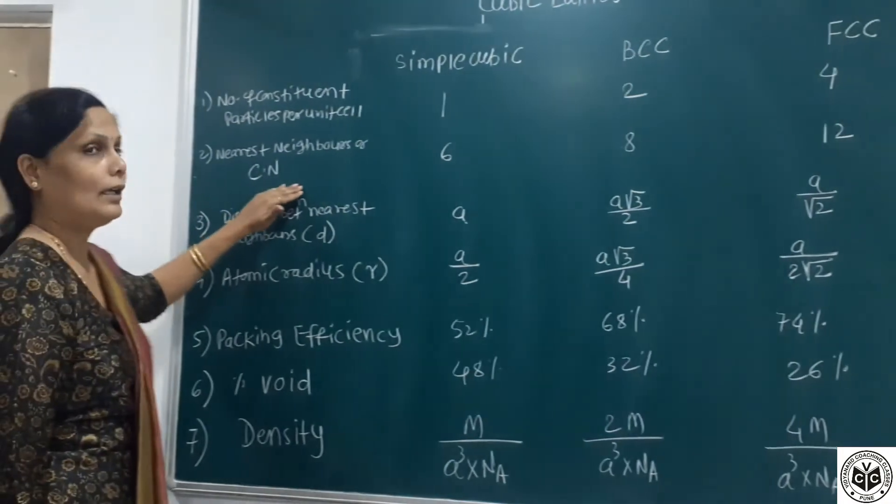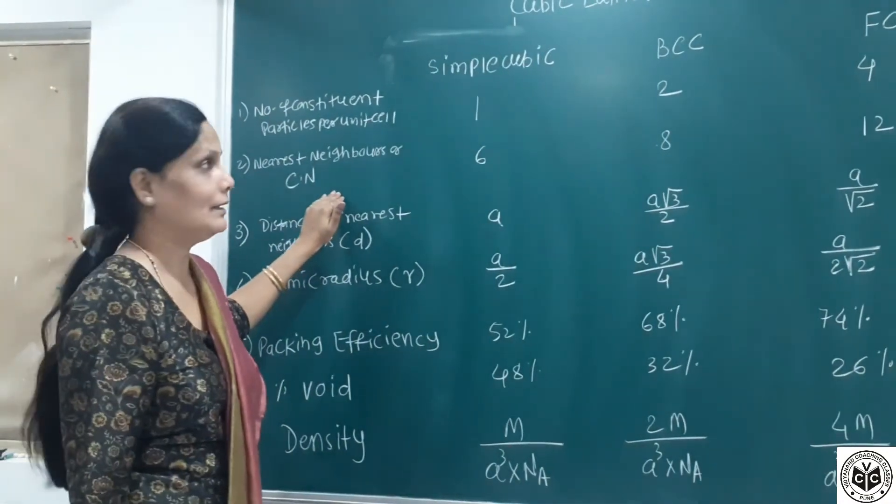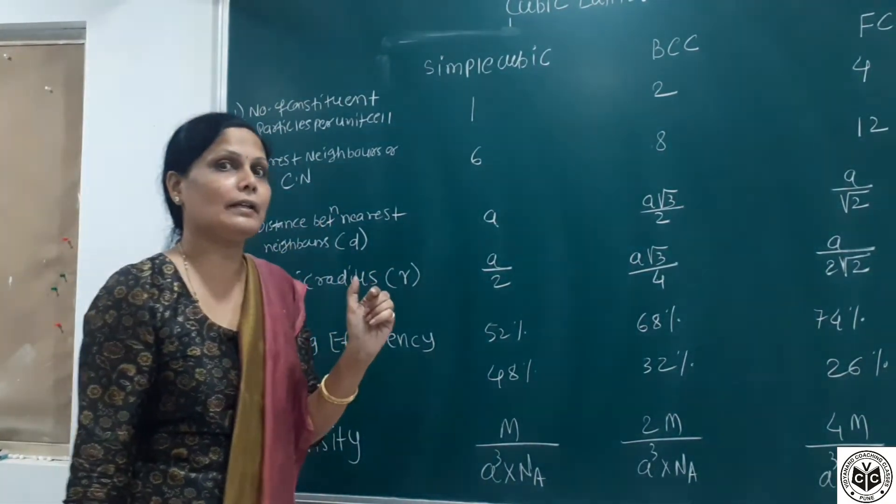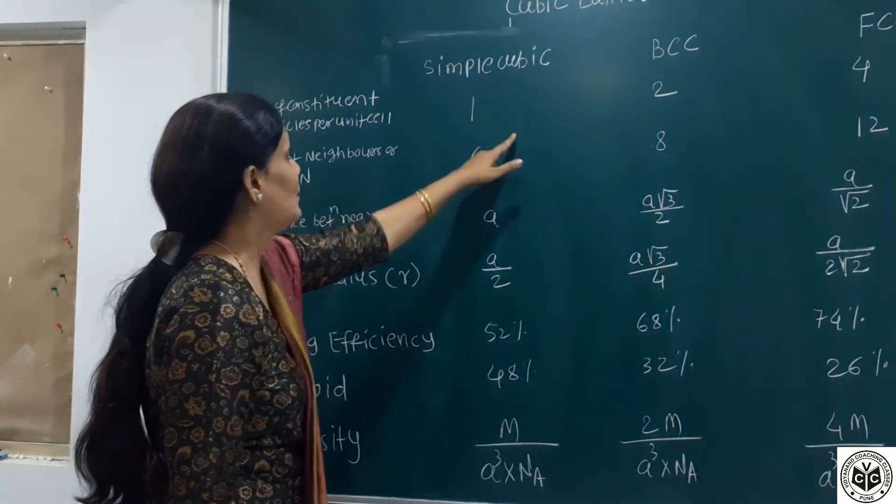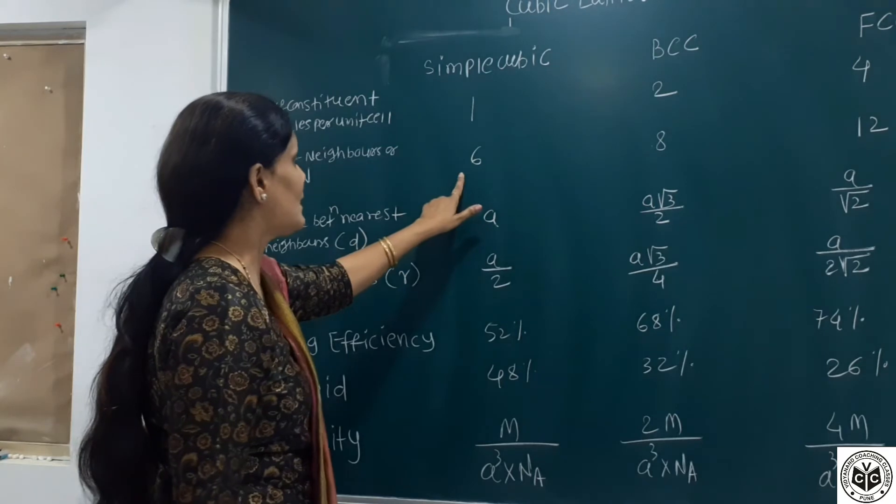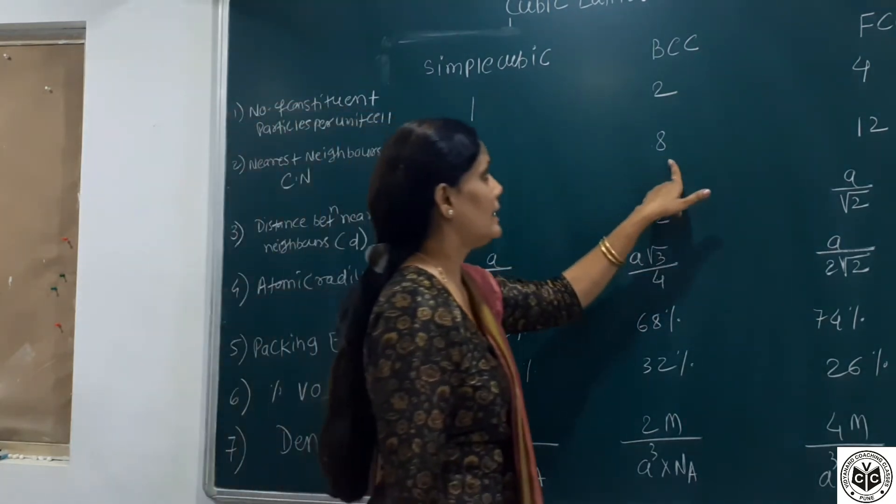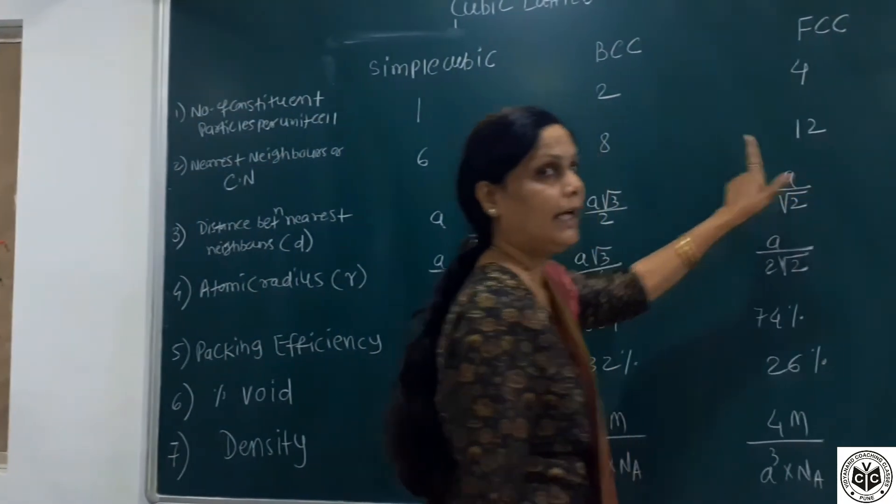Nearest neighbor or coordination number means each sphere is in contact with how many other spheres. For simple cubic, CN is 6. For BCC it is 8, and for FCC it is 12.